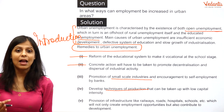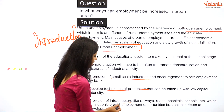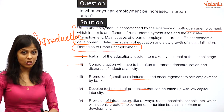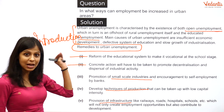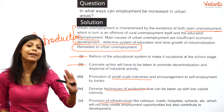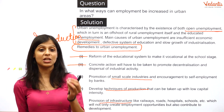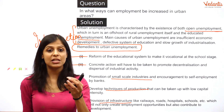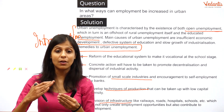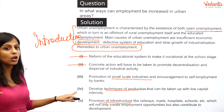Additional points include techniques of production and provision of work on infrastructure. These are the areas you are supposed to highlight when asked to suggest measures to increase the rate of urban employment. This is how your answer should look.